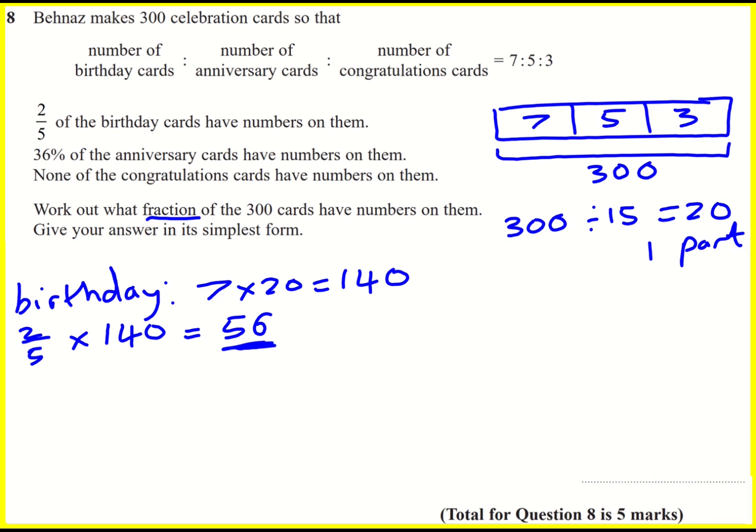Next up then, anniversary cards. So there are five parts. Five times 20 is 100. 100 anniversary cards. 36% of 100 is just going to be 36, because that's what it means per 100. That's what percent means.